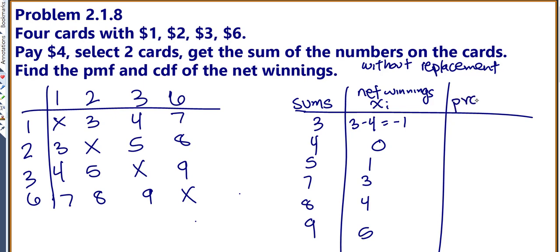Now let's find the probability of each one. So how many ways could I get a 3? There are 2 ways to get a 3. So 2 out of a total of 12. So 2 out of 12, which gives me 1/6.